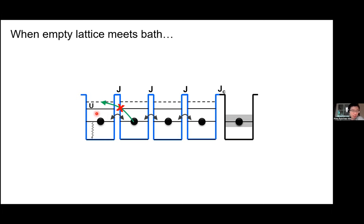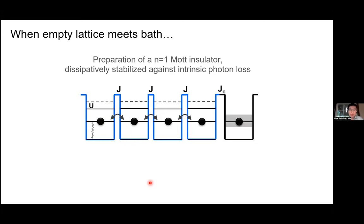Within the already-filled lattice, the process where instead of one and one you end up with two and zero is also highly forbidden, because it costs additional energy U to have this so-called doublon-hole pair. The result of this picture is that we end up in the Mott insulating state with exactly one photon per site. This state is stabilized against intrinsic losses — if at any point one of these photons inside the lattice is lost due to single-photon losses, the bath will refuel the whole lattice again. This is what we want to realize experimentally.